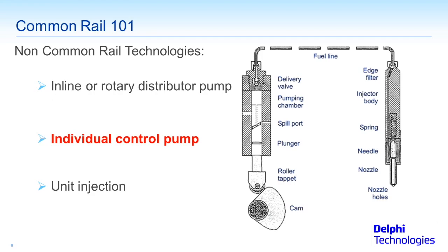Moving on to the individual control pump: you could put the assembly all in one unit with a rotating cam lobe surface that applies a piston to build pressure and spray out the bottom. Or you could separate it with a fuel line between the injector nozzle and the pressure production device. It's run by a cam lobe — one cam lobe and one pressurized piston plunger for each cylinder.